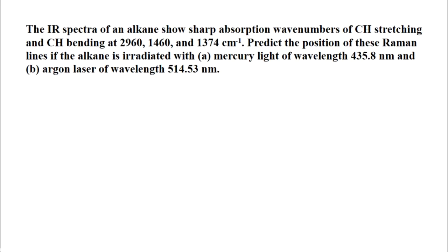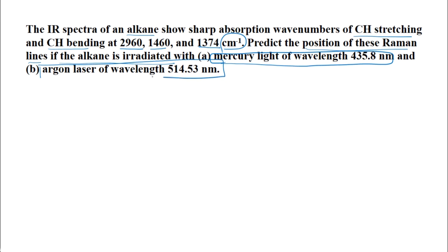The problem is: the IR spectrum of an alkane shows sharp absorption wave numbers for C-H stretching and C-H bending at 2960, 1460, and 1374 cm⁻¹. We have to predict the positions of these Raman lines if the alkane is irradiated first with mercury light of wavelength 435.8 nm, and second with an argon laser of wavelength 514.53 nm.